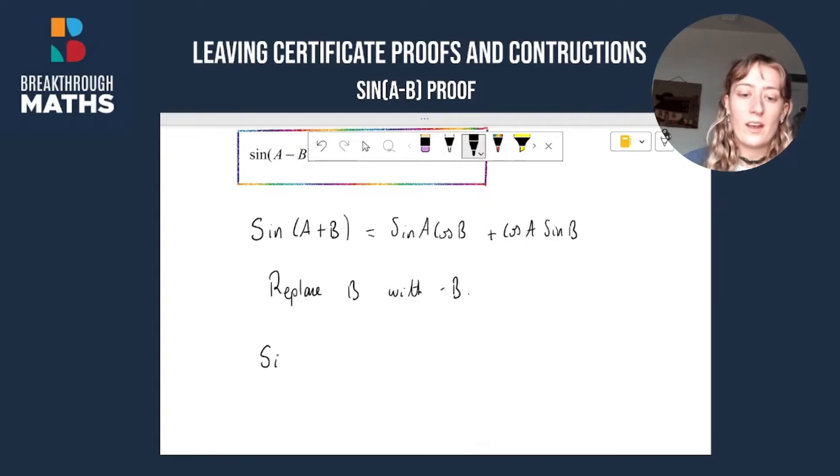So let's do that. So we end up with sine A plus minus B is equal to sine of A cos of minus B plus cos of A and sine of minus B.